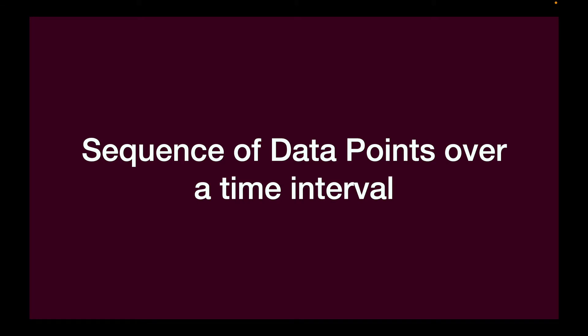By definition, time series data is a sequence of data points over a time interval. So let's say you have an interval of 10 minutes — all the data coming into the system within those 10 minutes will be in increasing time order. You might have one data point at minute one, the next at minute two, the next at minute three. Every data point coming into your system is associated with a timestamp, and more commonly the data arrives in the order of increasing time. There are cases when data can be out of order, but more often than not, time series data follows actual time order.